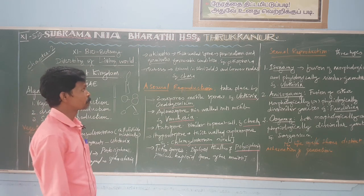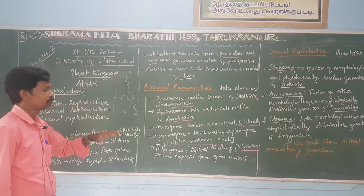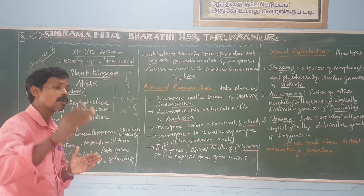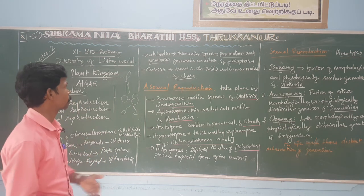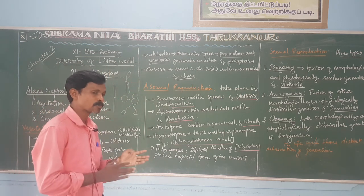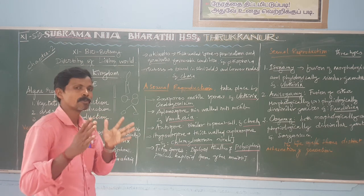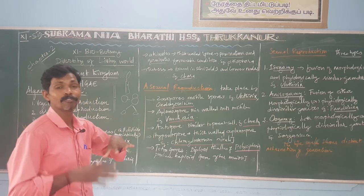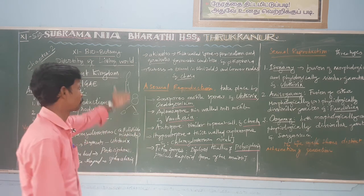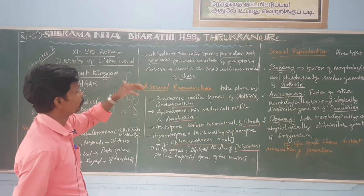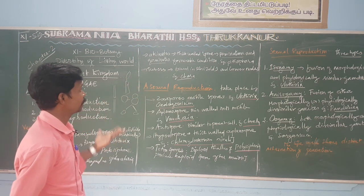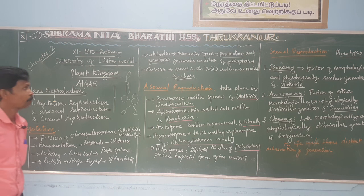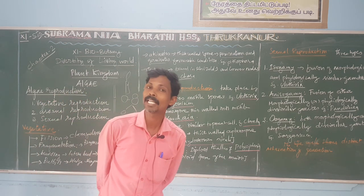Akinetes: it is a thick-walled spore involved in perennation and germination. Perennation means living for many long years. When the spores are present in an unfavorable condition, they wait. Whenever favorable conditions return, they are able to germinate and give rise to a young one. Example: Pythophora. Next, tubers — tubers found in the rhizoids, which are root-like structures.